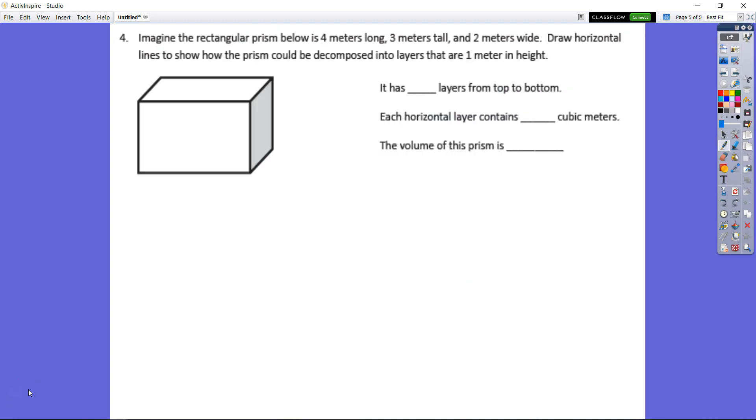So number four says, imagine the rectangular prism below is four meters long by three meters tall by two meters wide. Draw horizontal lines to show how the prism could be decomposed into layers that are one meter in height. We want one meter layers. And let's go ahead and take a look at that here. So it has blank layers from top to bottom. So from top to bottom, how many layers would it have? Well, we know if it is long, the length is four. We need three lines. One, two, three. So that's going to be our length. And we know that it is also three meters tall. That's going to be two lines to divide it. That's one, two, that's my height.